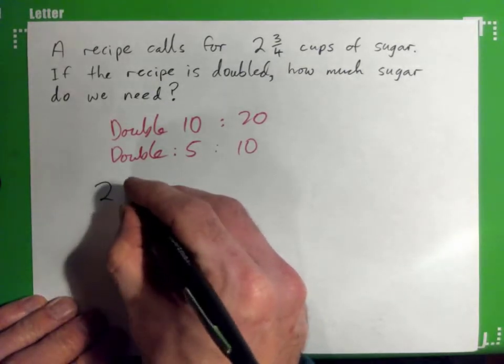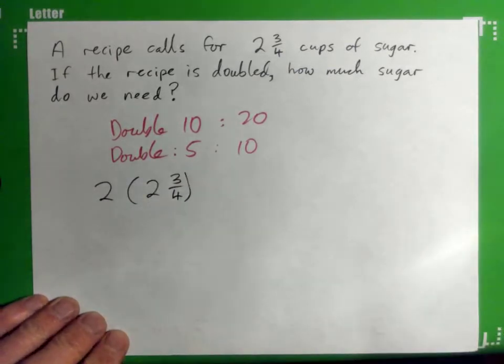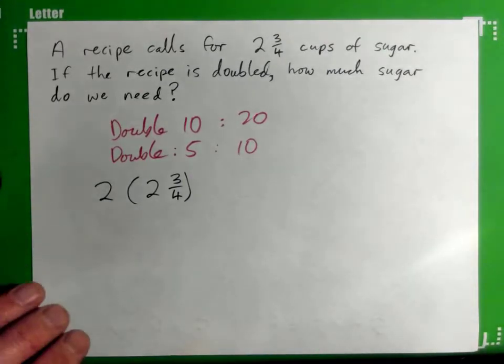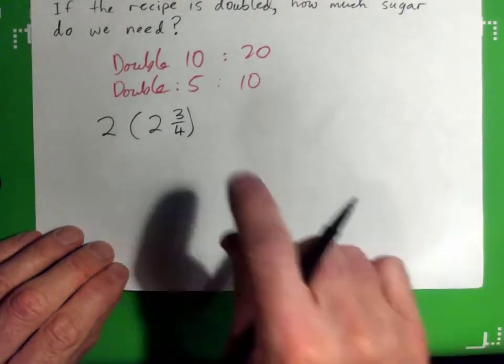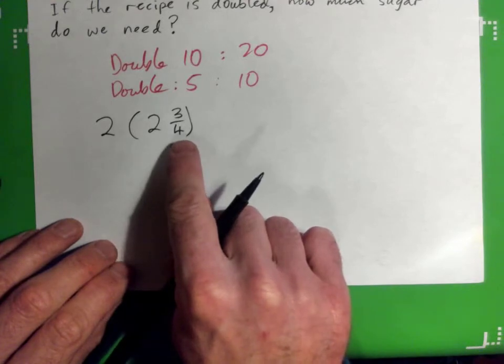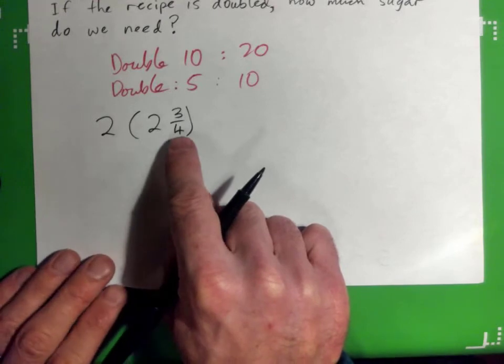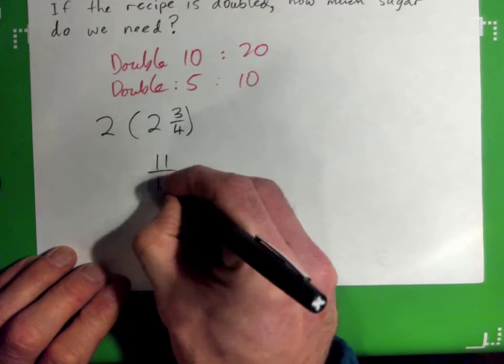So we go two times two and three quarters. Now the only thing is when you multiply mixed numbers like that, it's good to turn it into an improper fraction. So let's turn the two and three quarters to an improper fraction. So how do you do that? Nice, yeah, four twos is eight, so that's eight quarters plus three, good, eleven quarters, perfect.